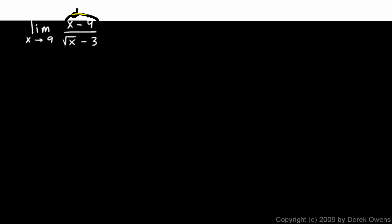So when we have that, we want to try to simplify the expression such that it doesn't give us a 0 over 0, so that we can cancel out a factor that's causing us to have a 0. And when we have radicals like this, a good way to simplify the expression is using conjugates.